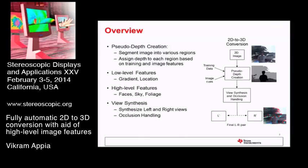Let me quickly jump to the overview of the talk. The basic 2D to 3D conversion algorithm takes a single 2D image and, based on some image features and local training, creates a pseudo-depth map. We used low-level features like gradient and location — we analyzed several features and narrowed it down to these two as most suitable. On top of that, we add high-level features like faces, sky, and foliage, trying to detect these in the scene and enforce more depth cues to make the depth map more realistic. Once we have the depth map, we do view synthesis — taking the 2D image and creating left and right views for a 3D system. I'll go through each of these topics in more detail.